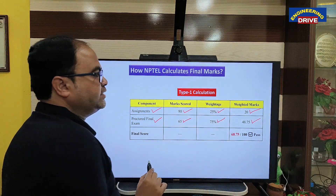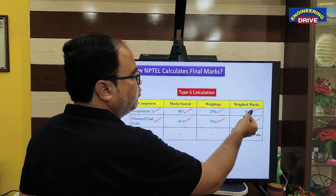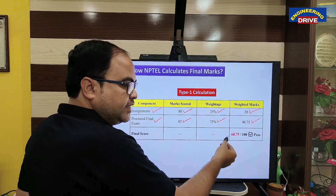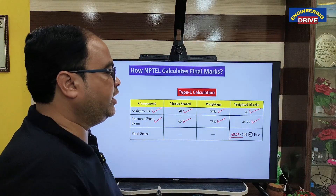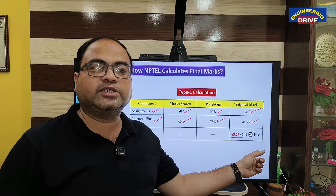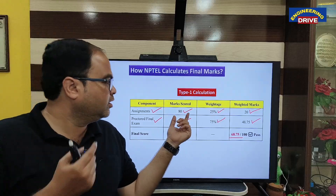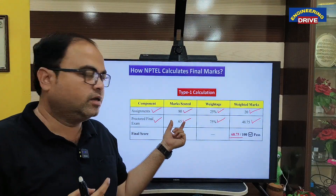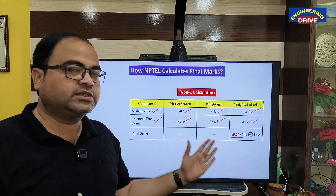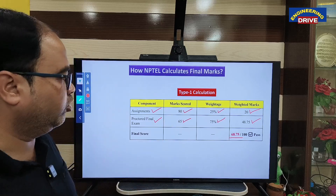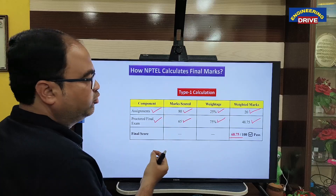Adding both components: 20 plus 48.75 gives 68.75 out of 100, and the student is considered passed. So in Type 1, you need to submit assignments and write the final exam — these are the two parts of the Type 1 calculation process.